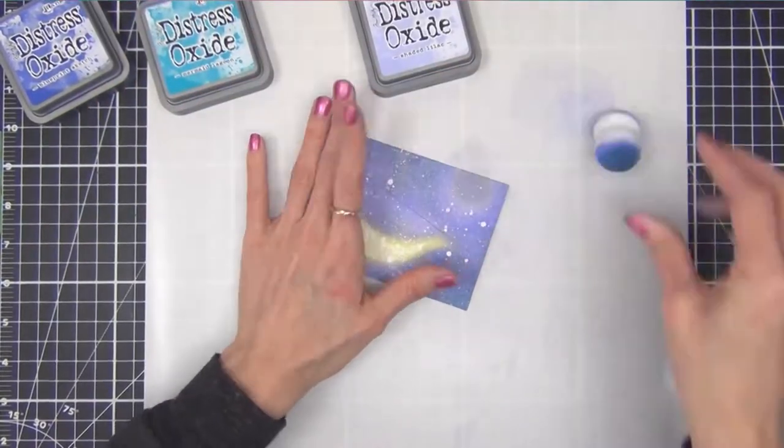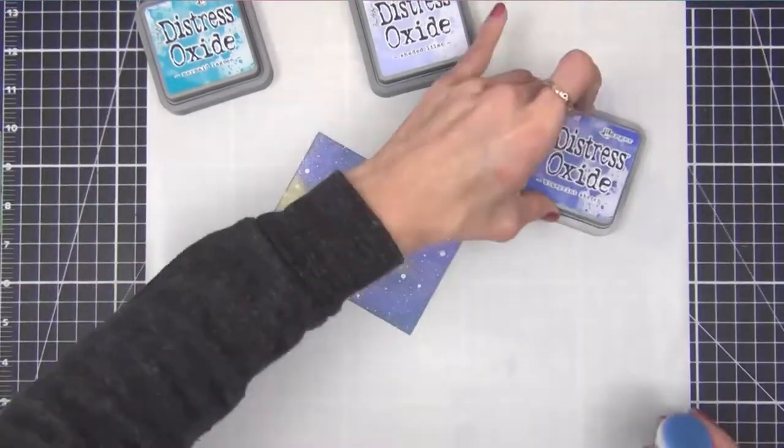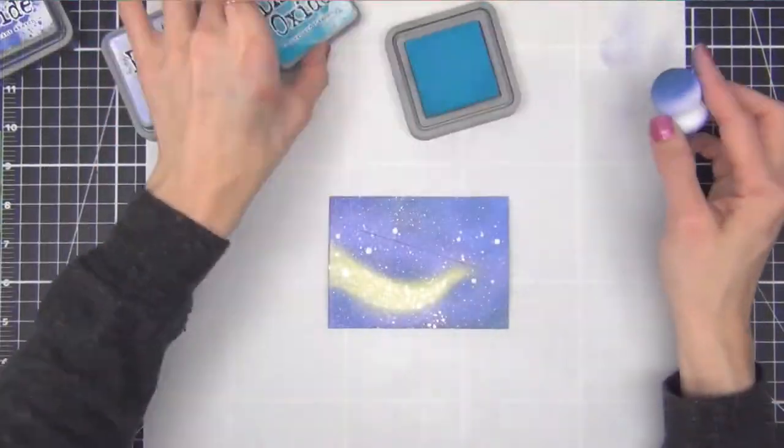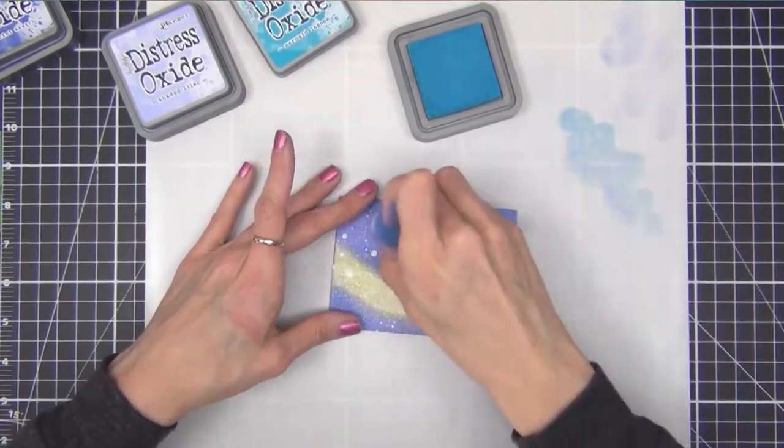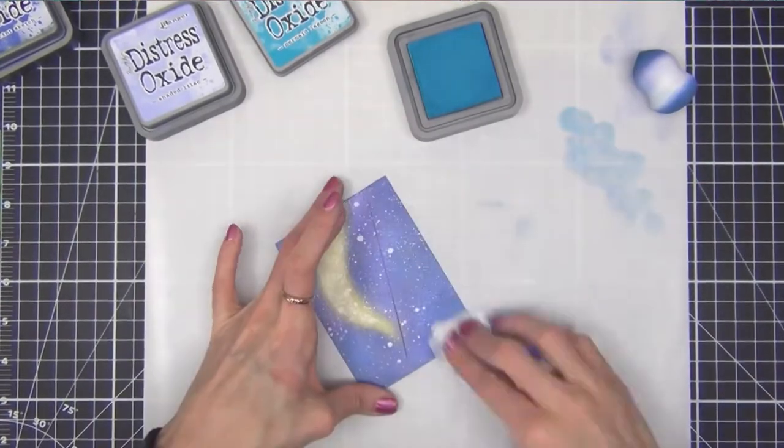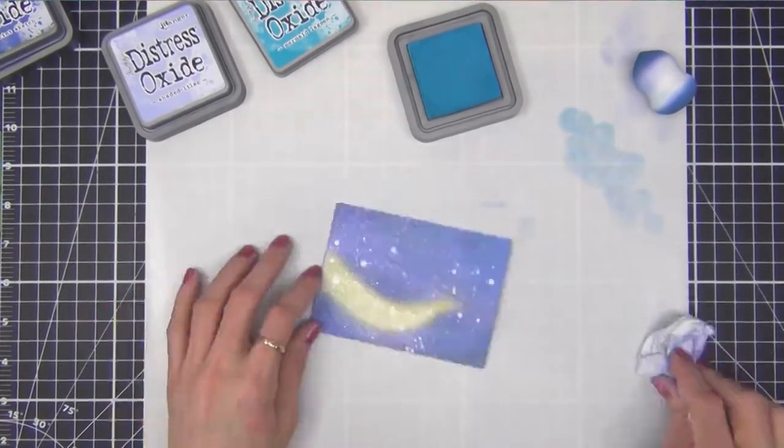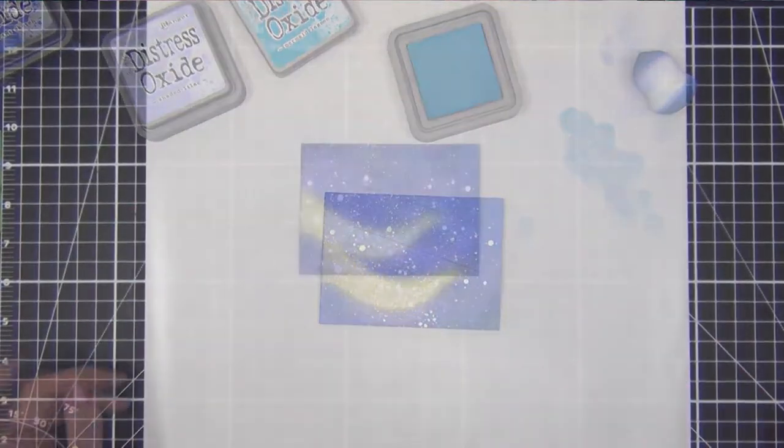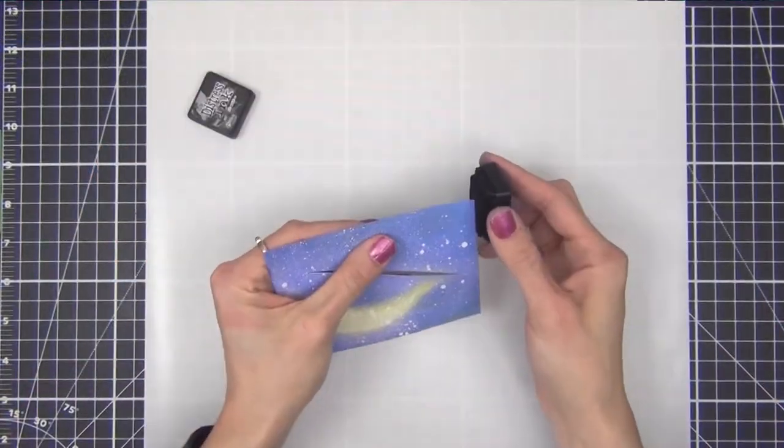And then at the top there I decided I didn't want that yellow part so I went ahead and covered it up again using the darker blue and purple and you can't really tell that it's there anymore which I think is so cool because you just can't really do that with other inks.